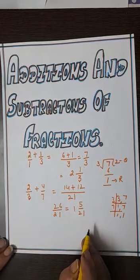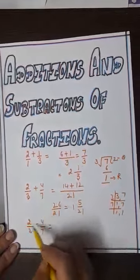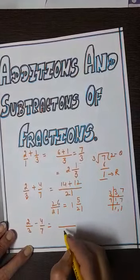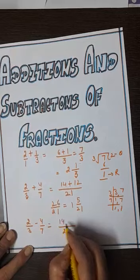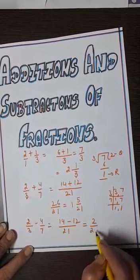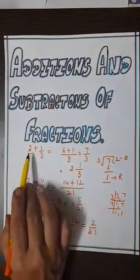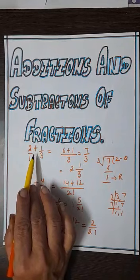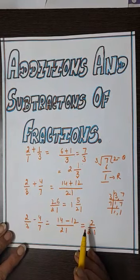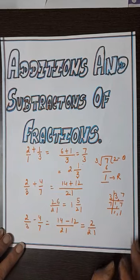So students, this is the concept of addition. The same procedure applies to subtraction. If the sign between two fractions is minus, we do the subtraction. We still take the LCM — from the previous example, 14 minus 12 gives 2, so the answer is 2 by 21. In conclusion: if both fractions have a positive sign between them, we add; if there is a negative sign, we subtract. In each case, we take the LCM and solve. I hope the concept is clear to everyone. Thank you so much.